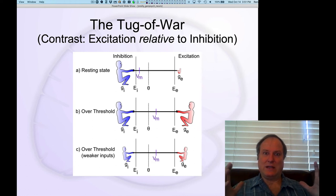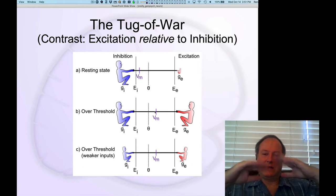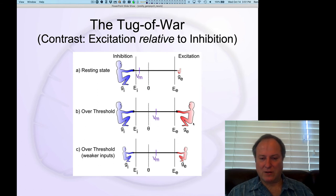When a signal comes in and the neuron starts receiving excitation, then this excitatory conductance gets bigger. And if in fact the excitatory conductance is exactly equal to the inhibitory conductance, then in fact, the membrane potential, according to this relative balance will be right there in the middle and it turns out that that middle happens to be above the threshold for firing action potential.